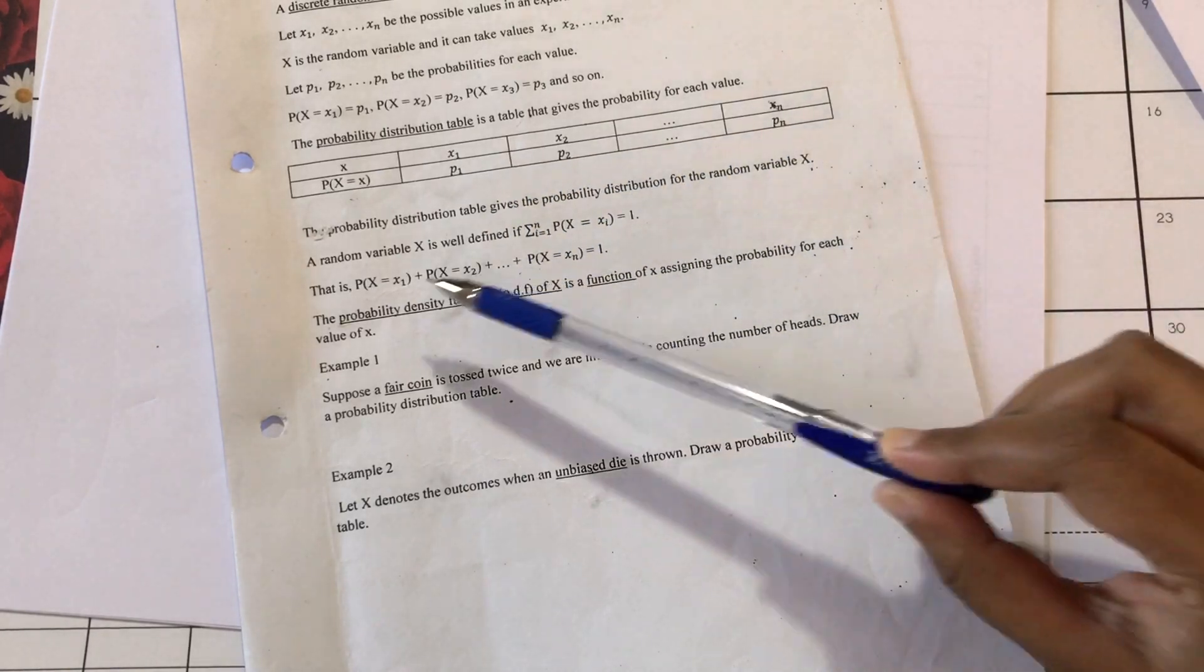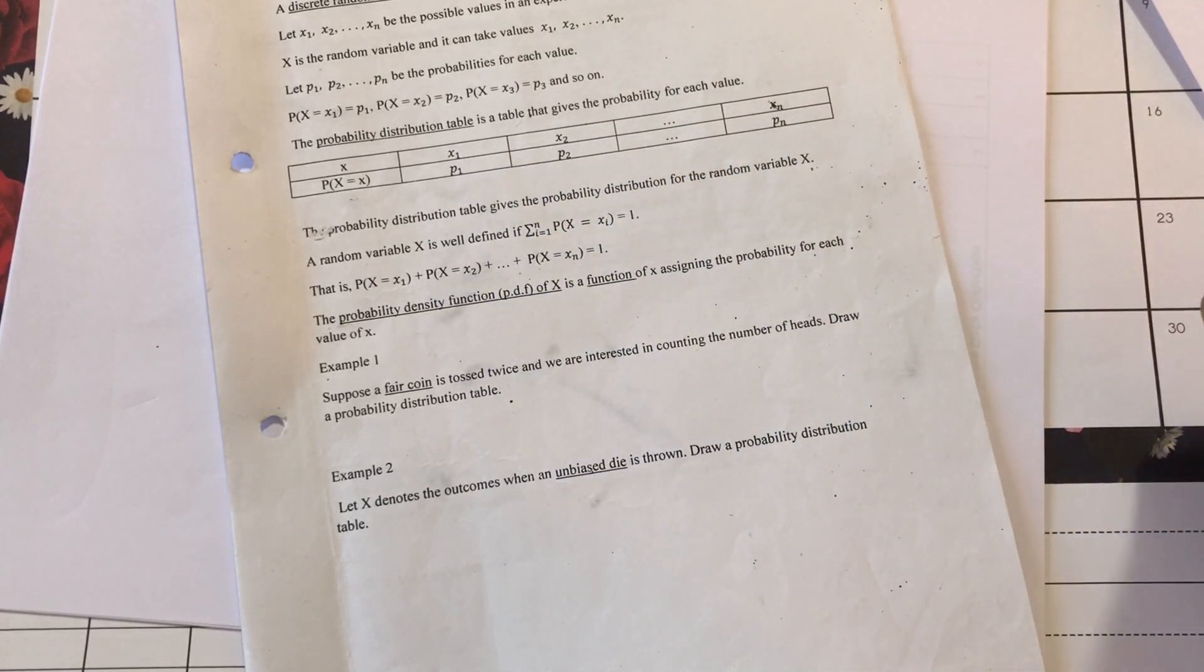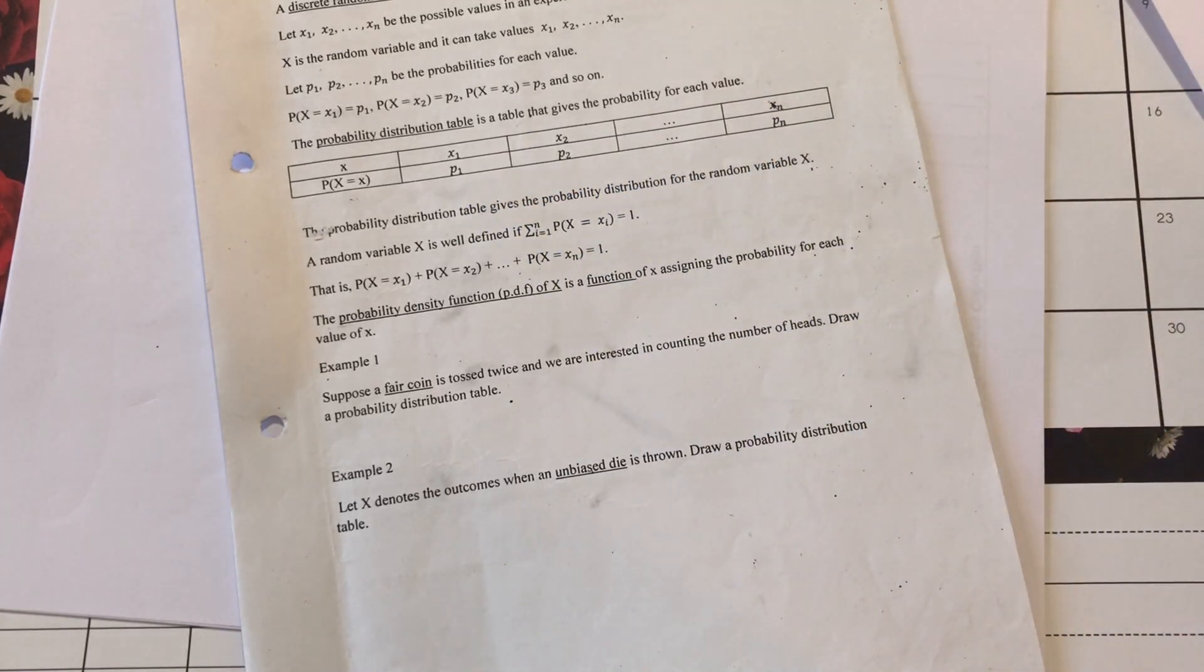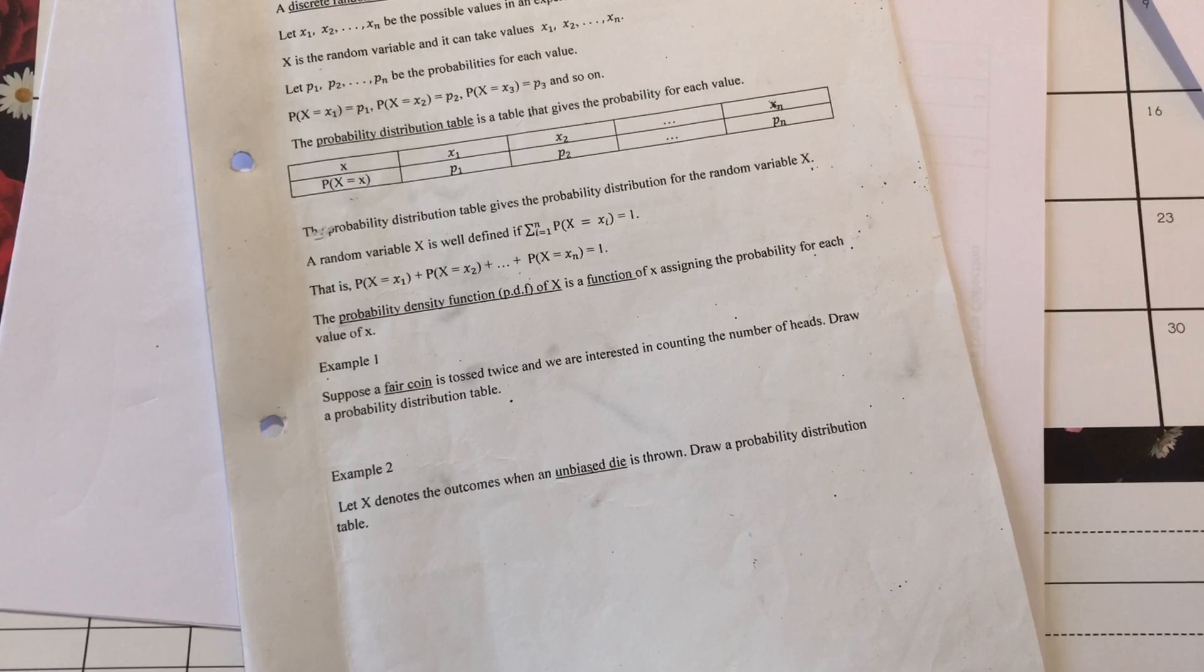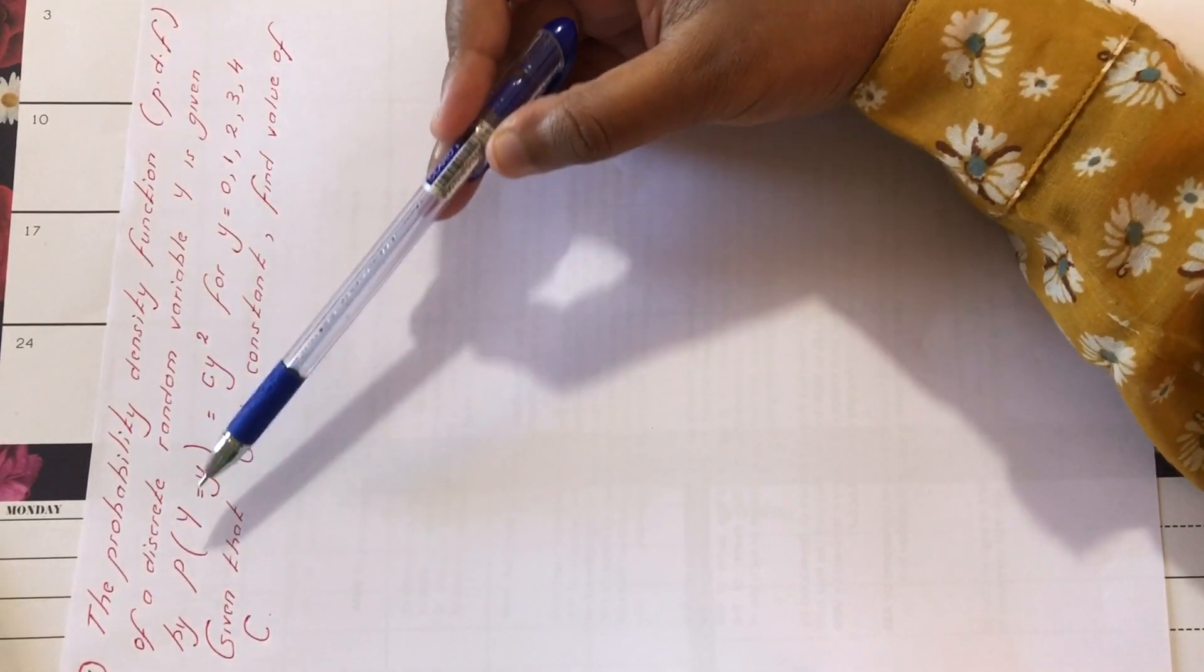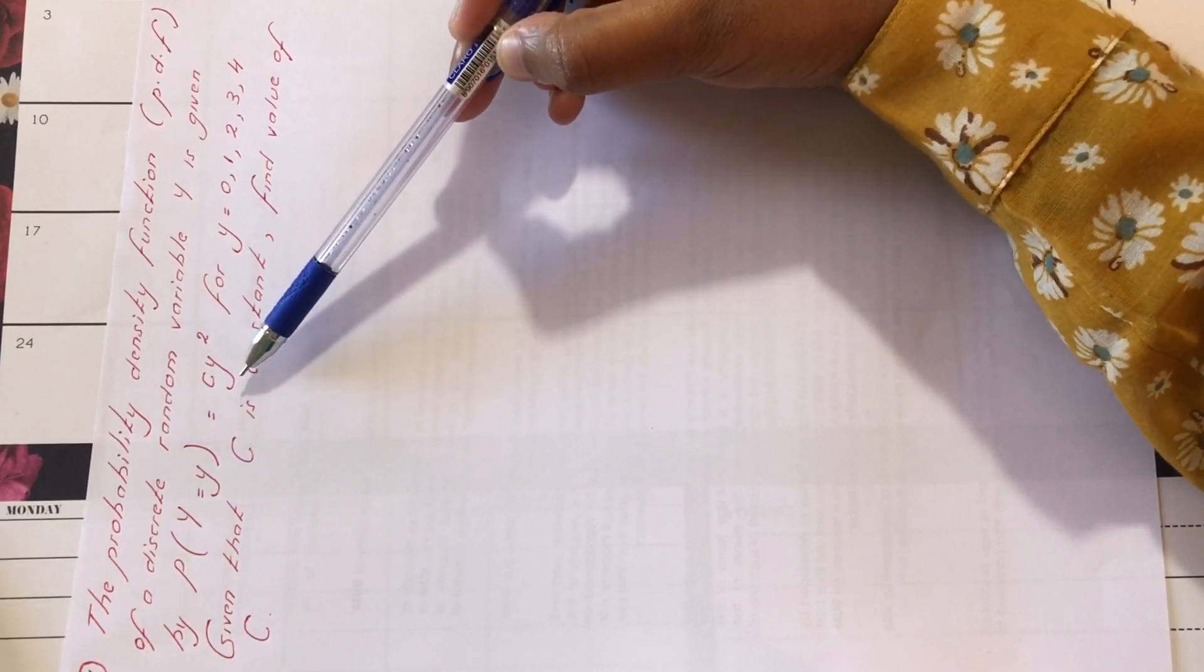So a random variable x is well defined if the summation of all the probabilities is equal to 1. We are now going to look at a few examples based on discrete random variables. Let's look at this question. The probability density function, pdf, of a discrete random variable y is given by p of y equals cy square.